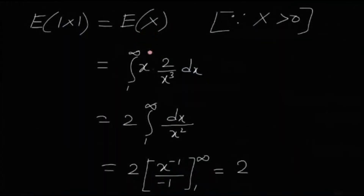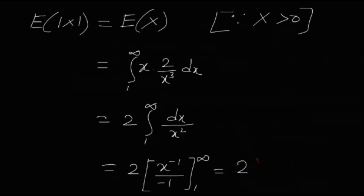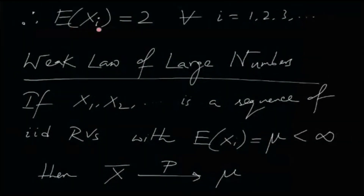The expectation is the integral from 1 to infinity of x · (2/x³) dx, which turns out to be 2. So E[|X|] = E[X] = 2. This means E[Xᵢ] = 2 for all i — all the random variables have the same finite expectation, which is 2.